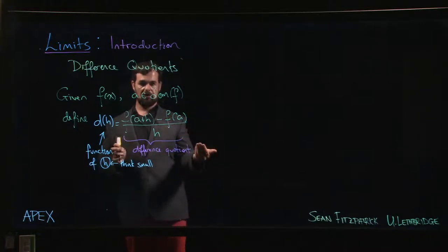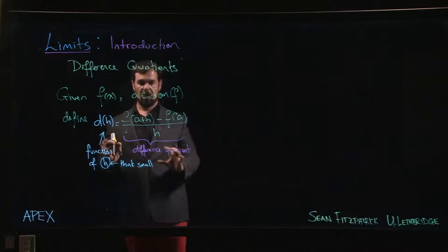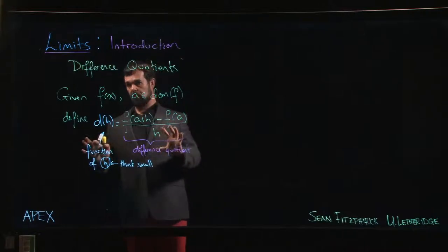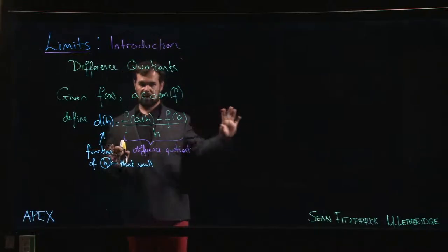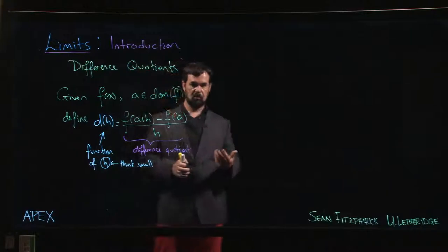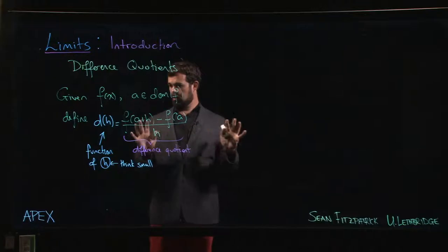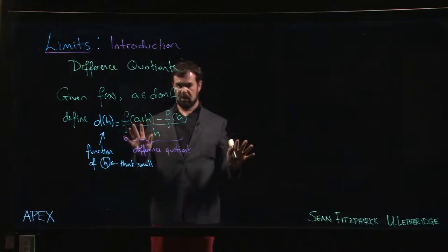Is it approaching some value? If it does approach some value, then this is something you could think of as your instantaneous speed or instantaneous velocity. That's sort of where this idea of a difference quotient comes from. We're going to see in the next chapter that it can also be applied to graphs. This notion of a tangent line to a graph also fits this same context.